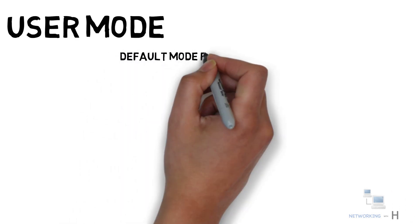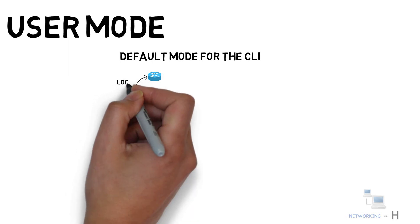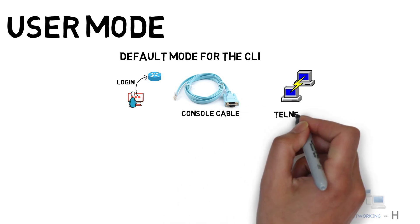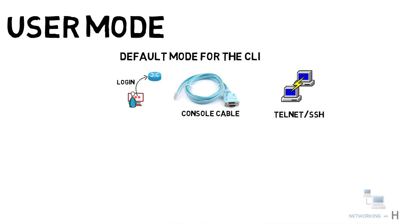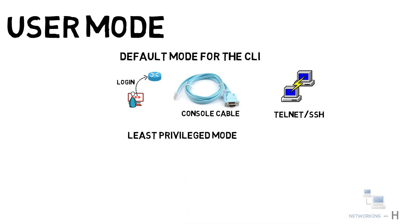The user mode is the default mode for the CLI. This is the first mode a user has access to after logging into the router. This is the prompt you are placed in when you access the device using the console cable, or via Telnet or SSH from any other node. No matter how a user accesses the IOS, it always places the user in this mode. This mode is the least privileged mode in the IOS.